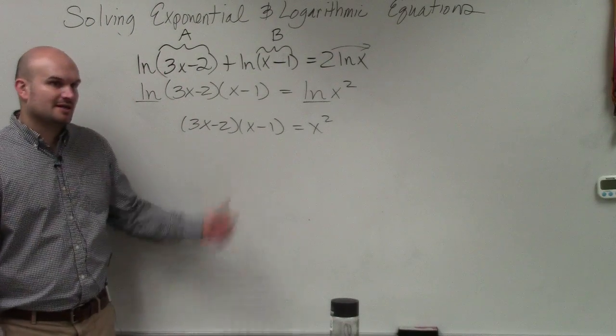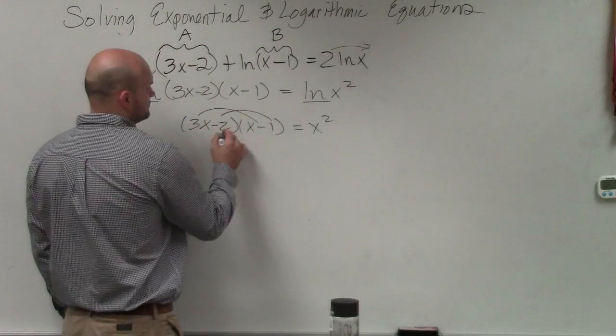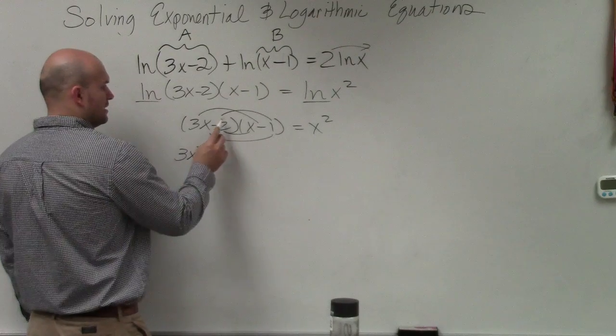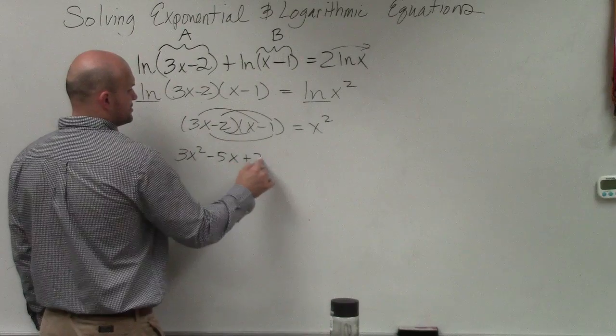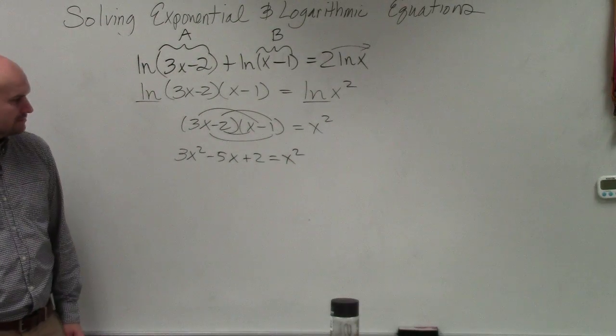And then, obviously, I can go ahead and do my math here. When using FOIL, I get 3x squared. That's going to be minus 3x, so minus 5x plus 2 equals x squared.